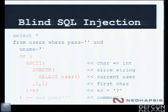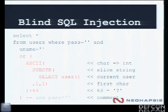The ASCII function takes a character and turns it into an integer. The substring command slices the string — the first position, one character — to select, say, the first letter of the username 'root', which is 'R'. Then we ask: is R's ASCII value greater than 63? 63 happens to be a question mark. If that's true, we might get a different HTTP response — for example a 404 for true, a 200 for false. That's the nature of blind SQL injection: we keep track of things like HTTP response codes, sizes, or response times.